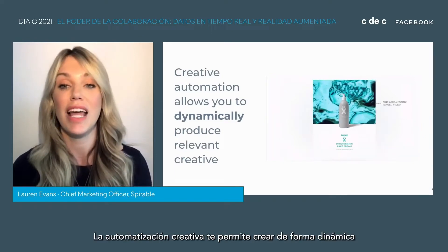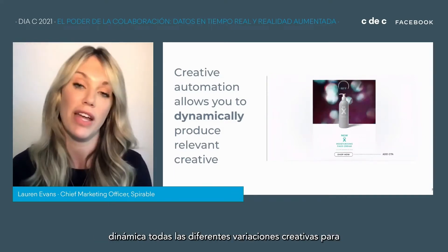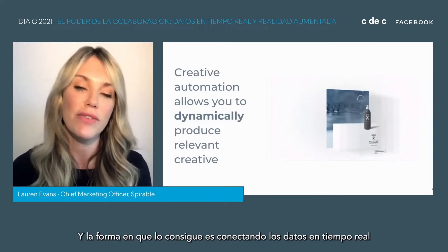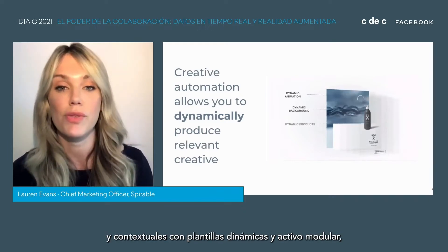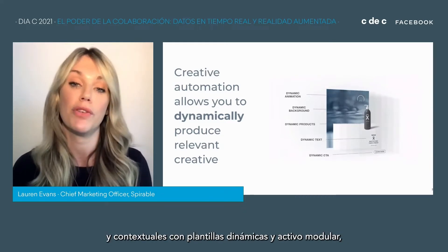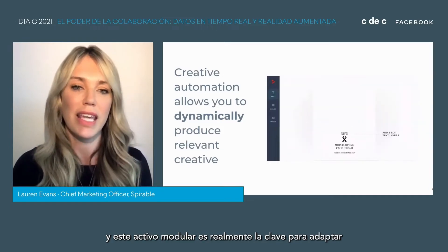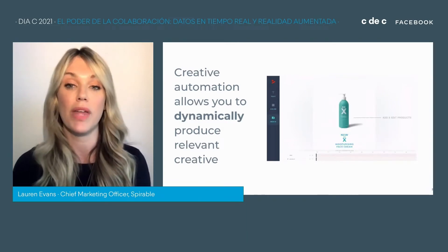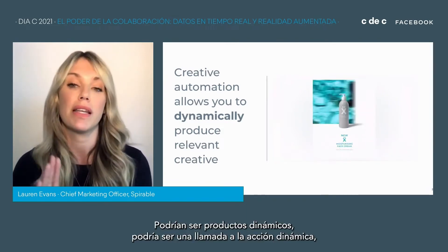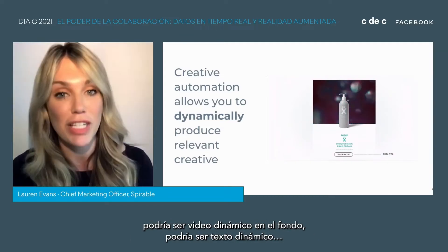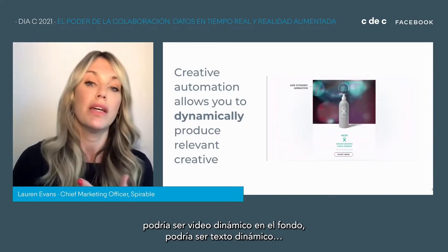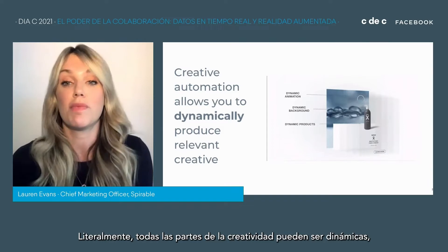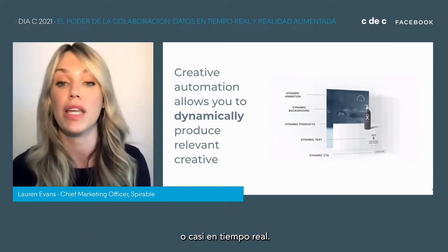Creative automation allows you to dynamically create all the different creative variations for all the different audiences in a matter of minutes. The way it achieves that is by connecting live and contextual data with dynamic templates and modular assets. These modular assets are really the key to adapting the creative process to allow it to be dynamic — dynamic products, dynamic CTAs, dynamic video in the background, dynamic text. Literally every part of the creative can be dynamic, which ultimately means it can be adapted in real time or near real time.